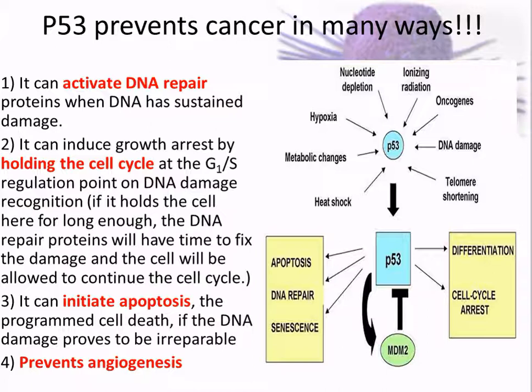Third, P53 initiates apoptosis — if it can't fix the cell, it tells the cell to die, because we would rather have you die than become a cancer cell. Fourth, it prevents angiogenesis, which is the creation of new blood vessels. If the cancer is growing and getting bigger, cells far from a blood vessel will die. P53 prevents the cancer from growing new blood vessels to survive.